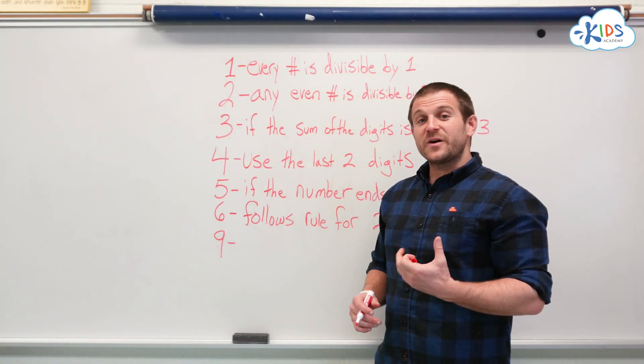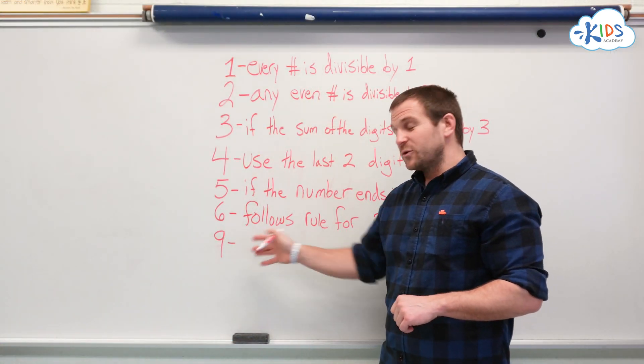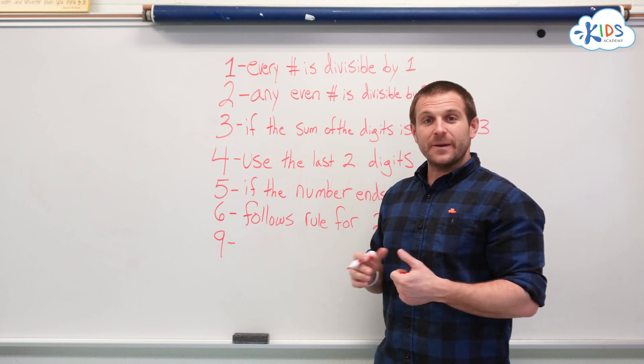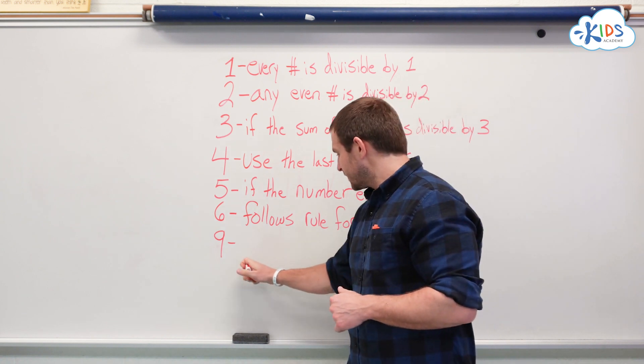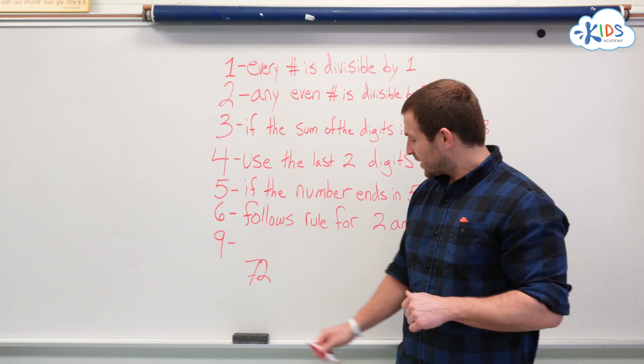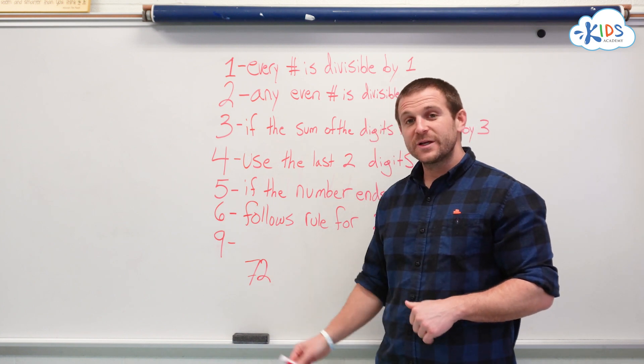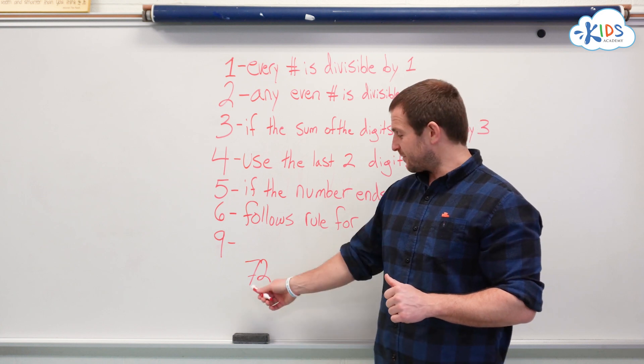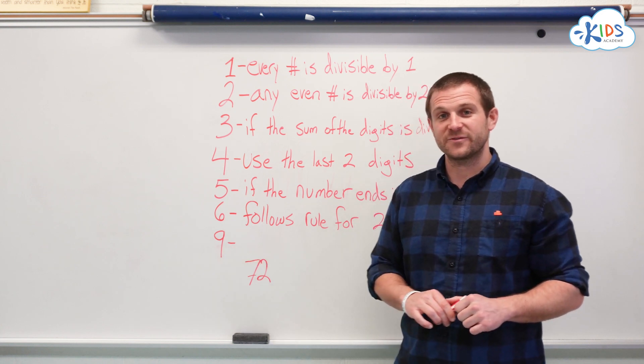The rule for 9 is very similar to the rule for 3. If you add up all the digits and the sum is divisible by 9, then the number itself is divisible by 9. Let's take 72 for example. If we add up 7 plus 2, the answer is 9. 9 is divisible by 9. Therefore, 72 is divisible by 9.